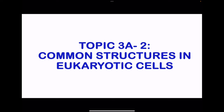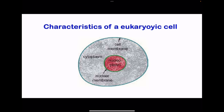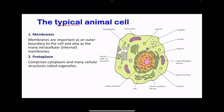In part two, we go to common structures in eukaryotic cells. Here we're going to be looking at plant as well as animal cells. This is a basic structure of a eukaryotic cell. There is a cell membrane, cytoplasm, and a nucleus with a nuclear membrane. All eukaryotic cells have these basic structures. For a typical animal cell, components include the cell membrane as well as internal membranes around organelles. These membranes are made up of phospholipid bilayers. The next part is the protoplasm, which is the cytoplasm as well as the organelles contained inside.